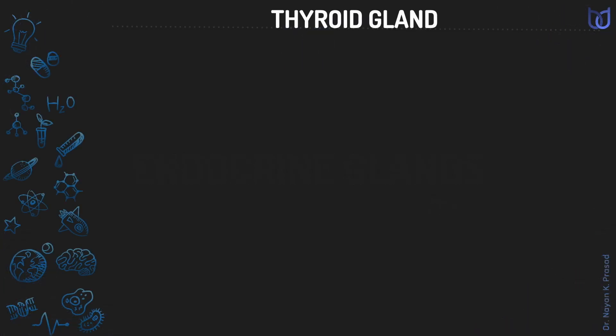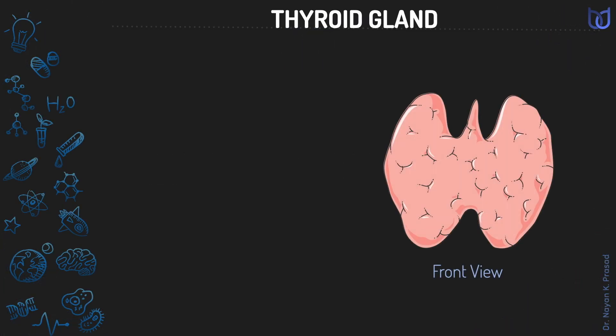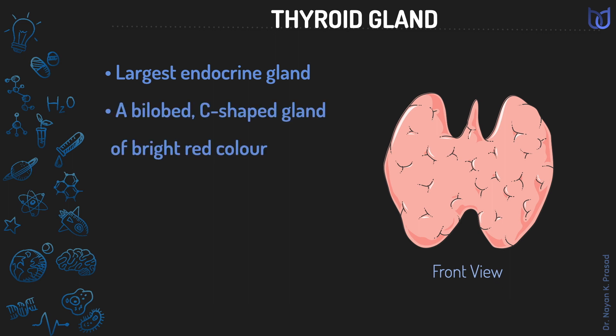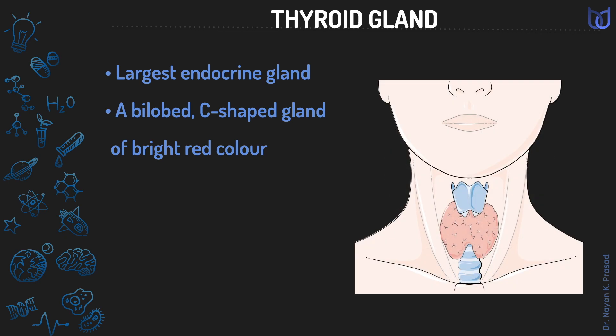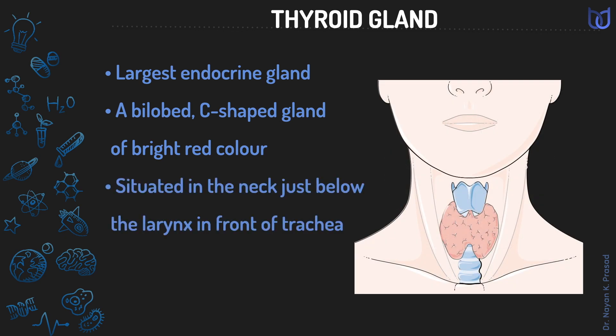The thyroid gland is the largest endocrine gland of the body. It is a C-shaped gland of bright red color, situated in our neck just below the larynx, in front of the trachea.